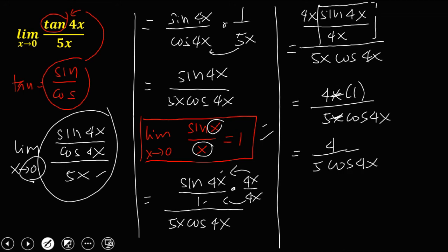So this time we can substitute now this 0 to x, and this one is 4 over 5 times cosine 4 times 0. And this cosine 0 is equal to 1, so 4 over 5 times 1. So this limit now is equal to 4 over 5.